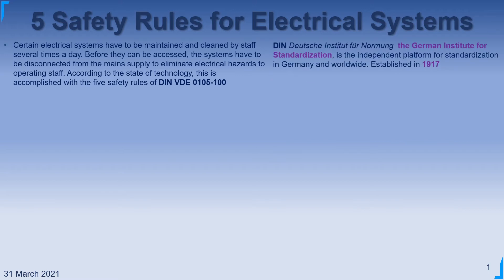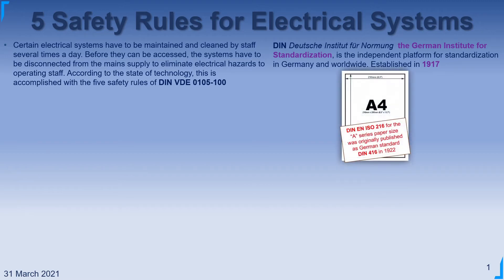DIN stands for Deutsche Institut für Normung in German, or the German Institute for Standardization — an independent platform for standardization in Germany and worldwide. You may not know this: one of the commonly known standards for A series paper size was originally published under DIN 416, a German standard in 1922.